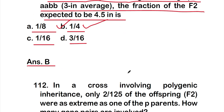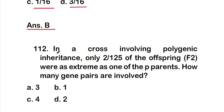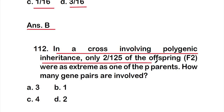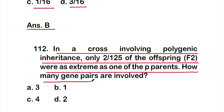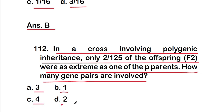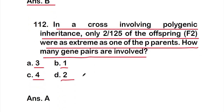Question 112: in a cross involving polygenic inheritance, only 2/125 of the offspring in F2 were as extreme as one of the parents. How many gene pairs are involved? Option A 3, Option B 1, Option C 4, Option D 2. The right answer is Option A — 3 gene pairs are involved.